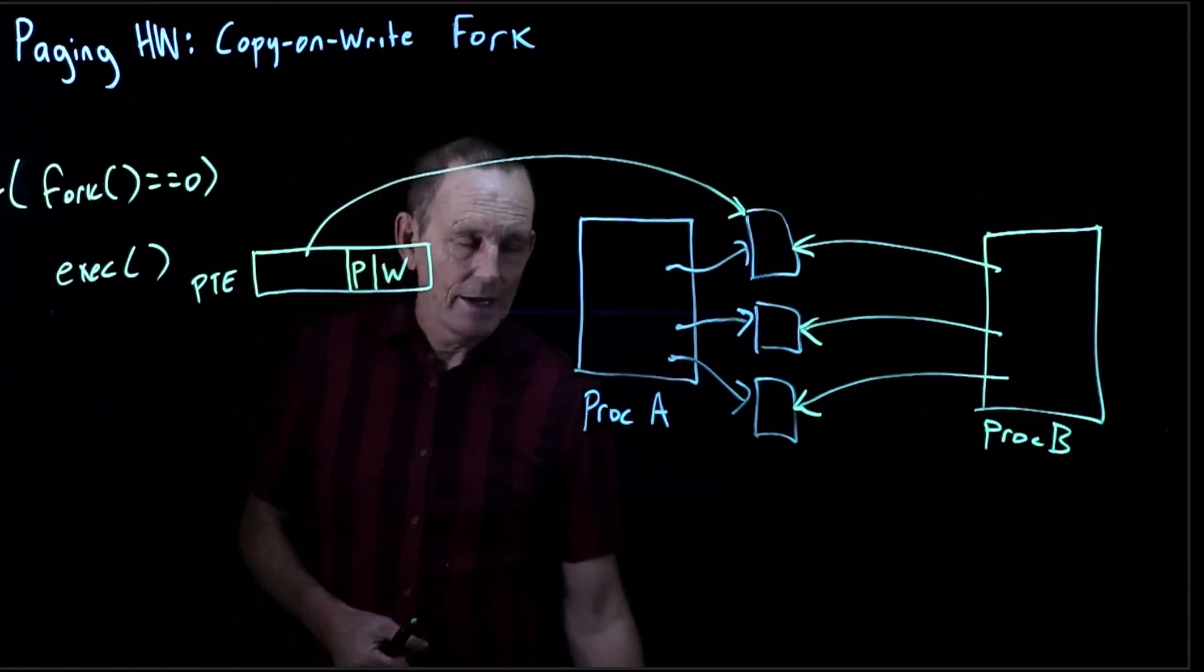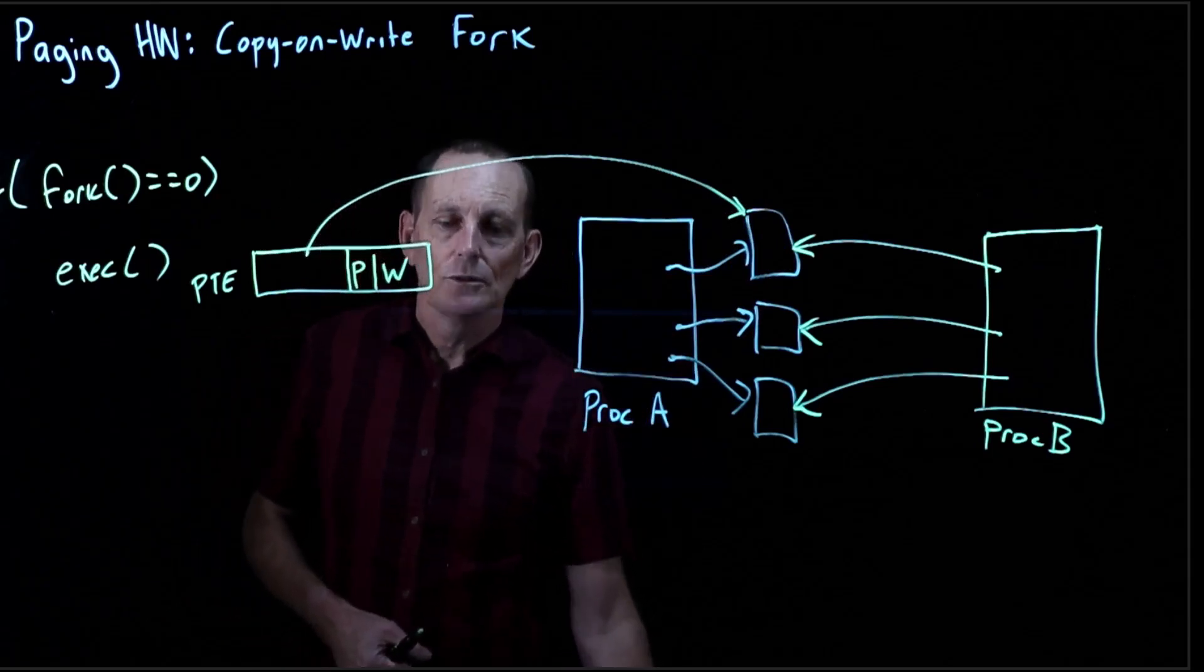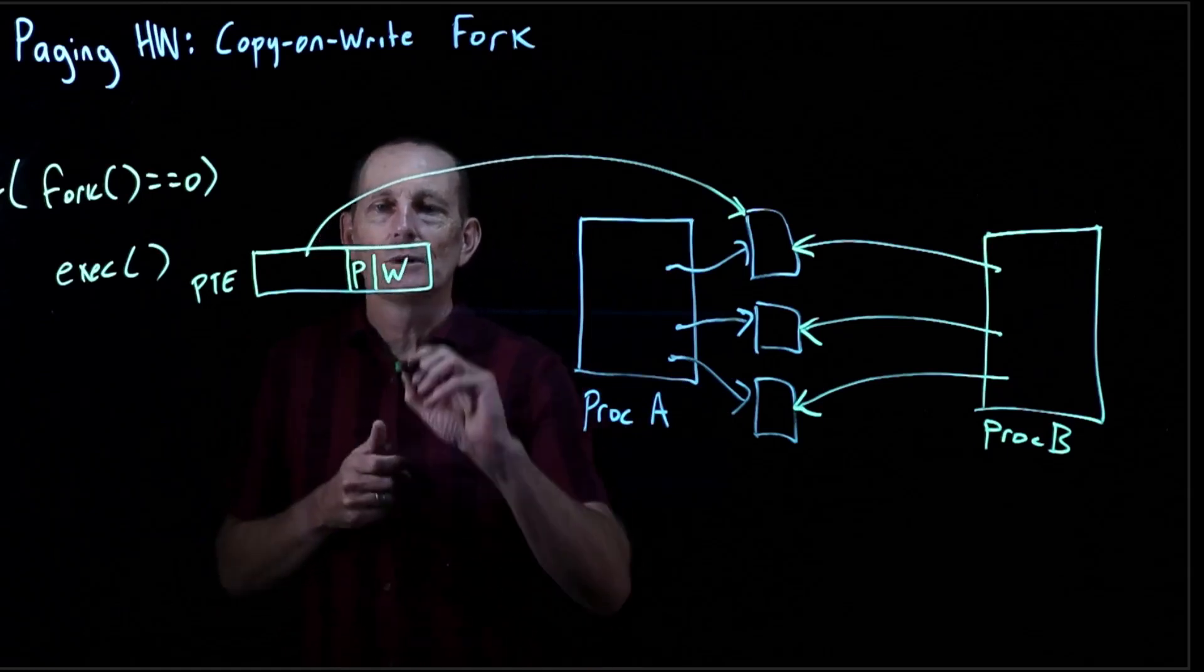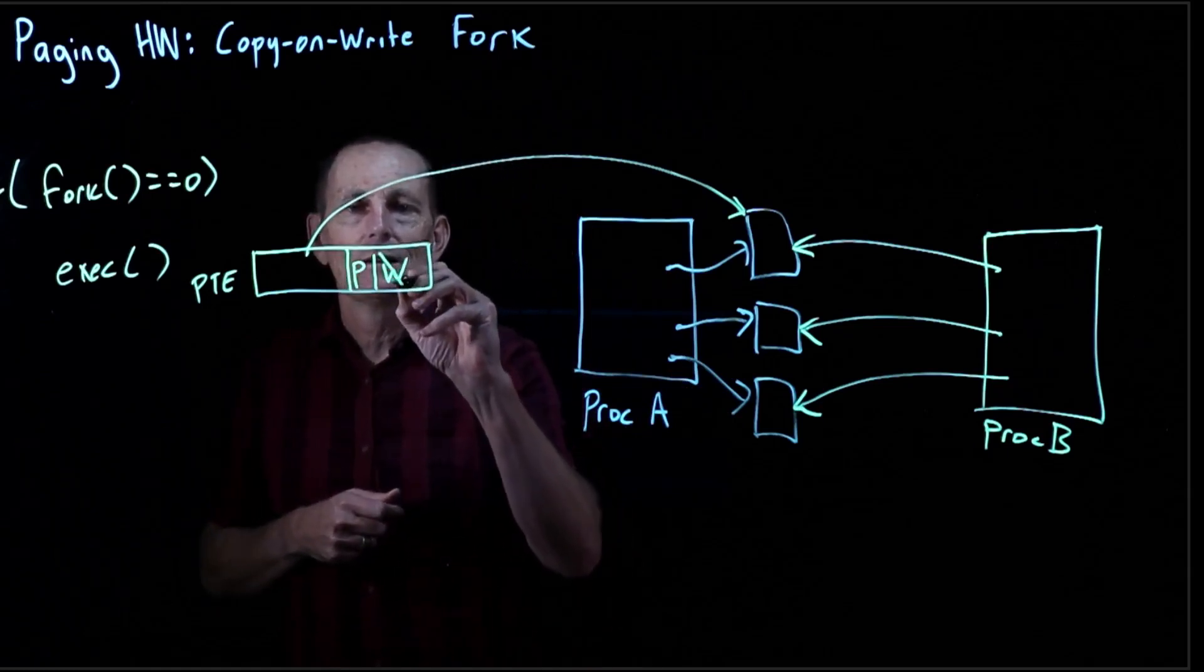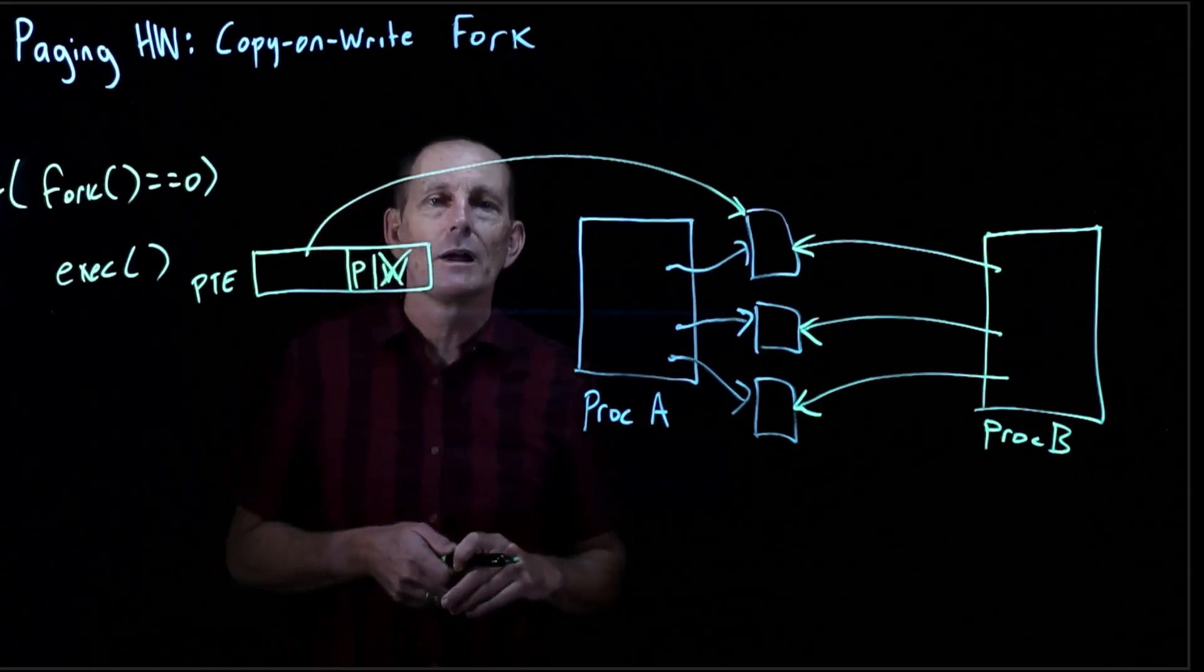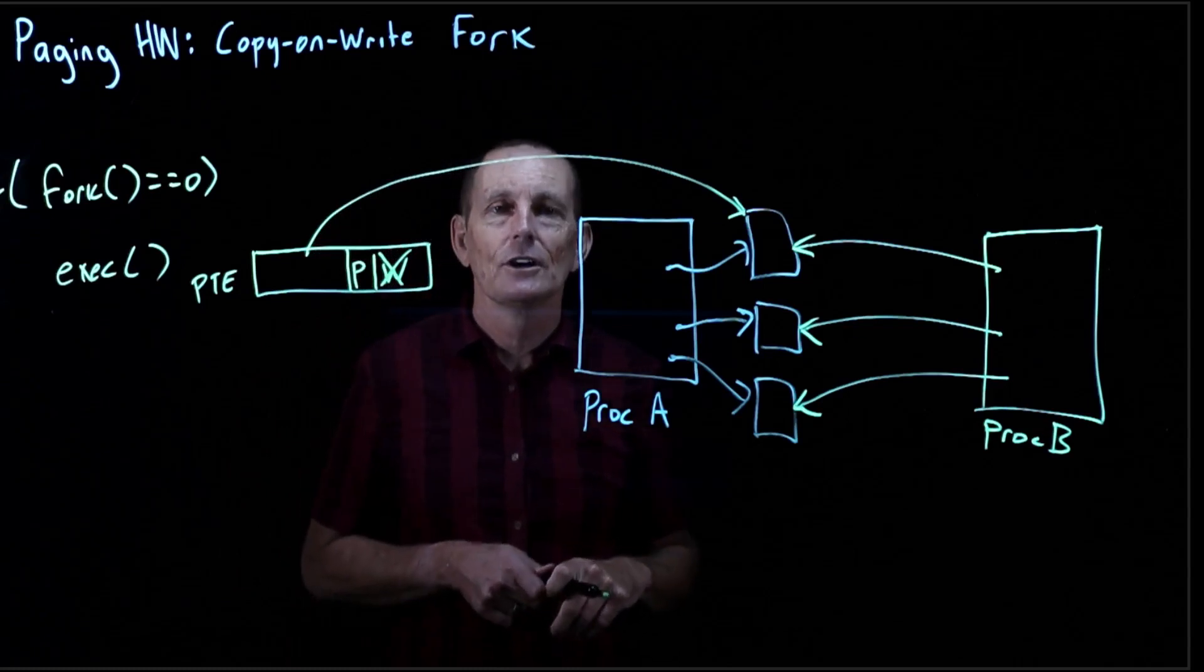When we do the copy-on-write fork, what we're going to do is remove this writable bit. So we're going to basically say it is no longer writable. That is, we'll get a page fault on a write.